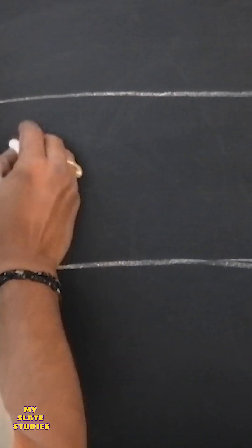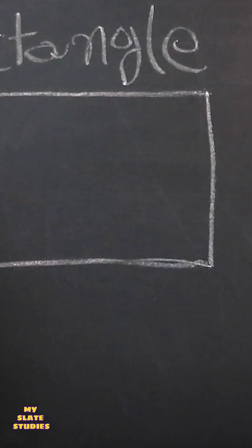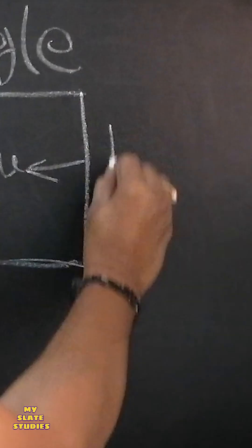Moving on to the rectangle, with opposite sides of equal length and 90-degree angles. Doors and smartphones are rectangles.